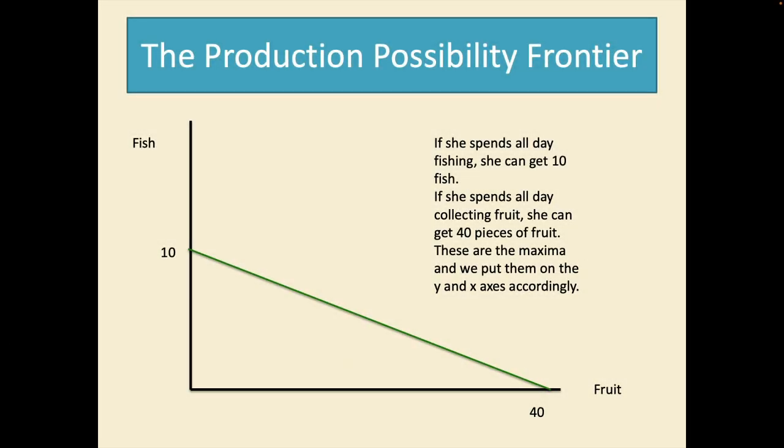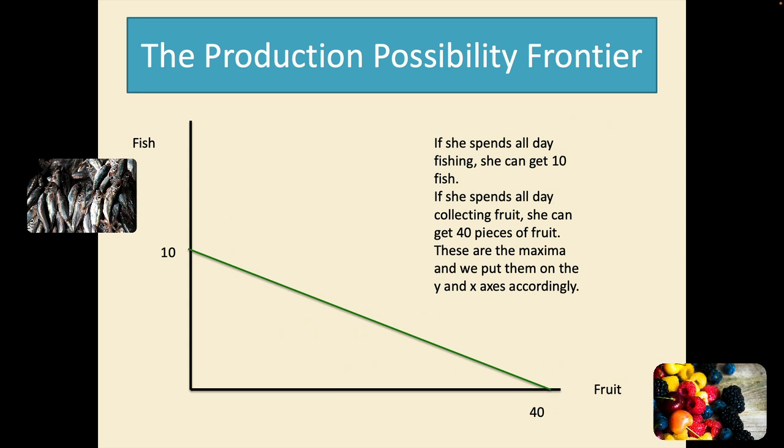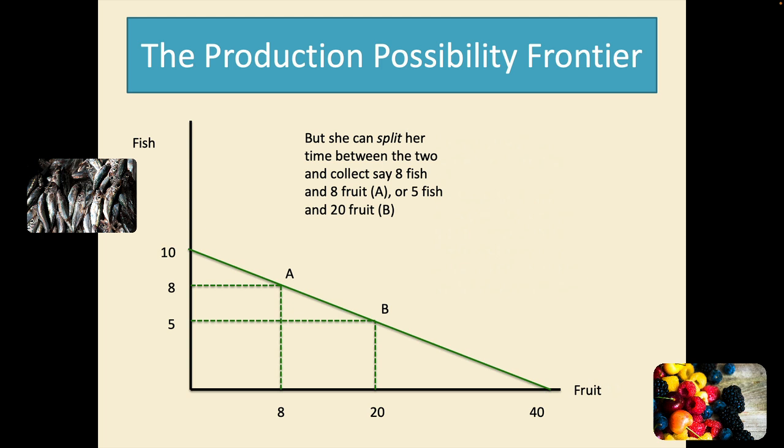So if she spends all day fishing she can get ten fish. If she spends all her productive day collecting fruit she can get forty pieces of fruit. These are the maxima that we put on the y and the x axis accordingly. Now she can split her time between the two and collect say eight fish and eight fruit at point A, or five fish and twenty fruit at point B.